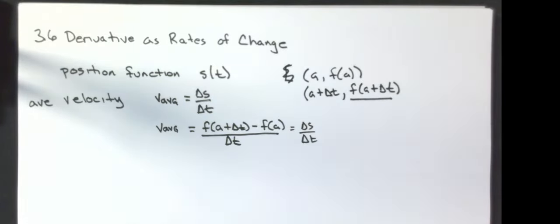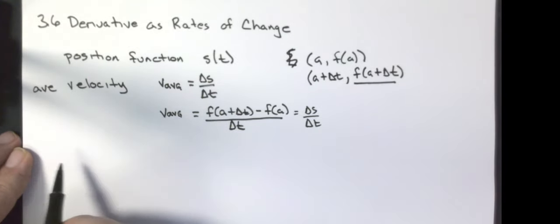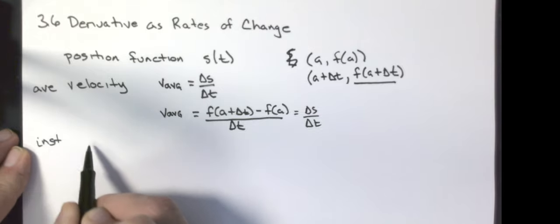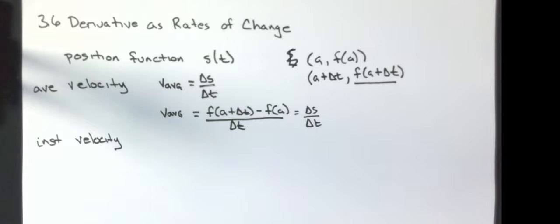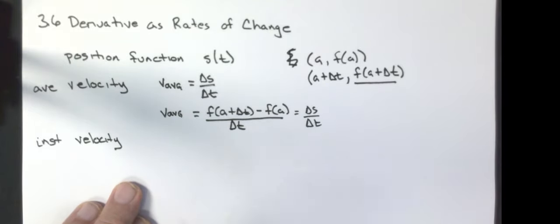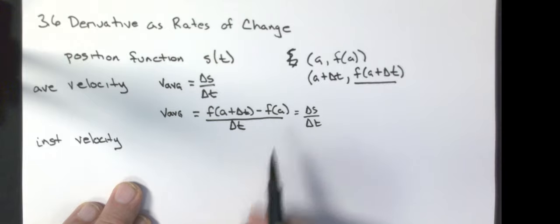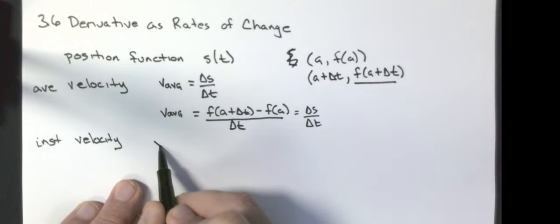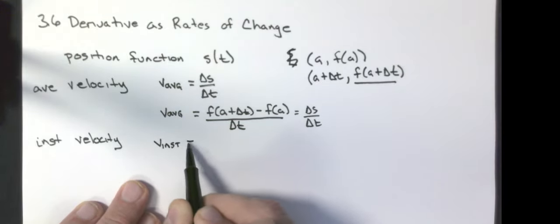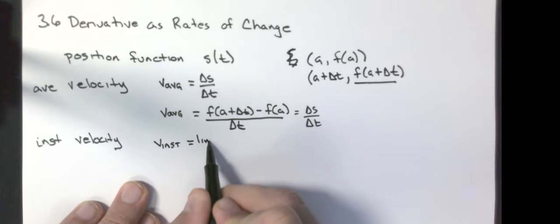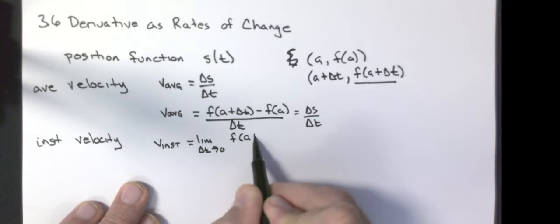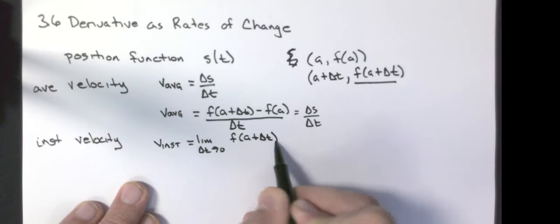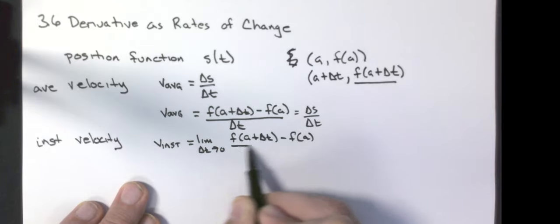We've already covered that. The instantaneous velocity — that's when I get into the calculus. The instantaneous velocity is the limit of the average velocity as delta T goes to zero. So my instantaneous velocity is equal to the limit as delta T approaches zero of F of A plus delta T minus F of A, all over delta T.